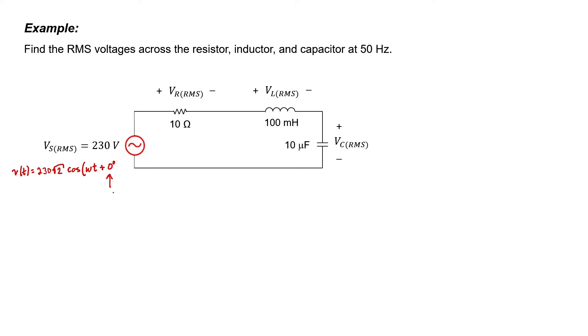I don't know what phase to write because the phase wasn't given in the problem. We were only told the RMS voltage, or equivalently, the amplitude of that sine wave. I've arbitrarily chosen 0 degrees, which means that all of the other sine waves in my circuit should be referenced from 0 degrees.